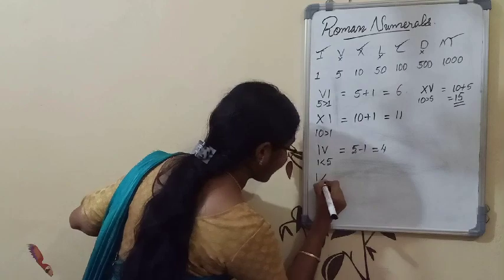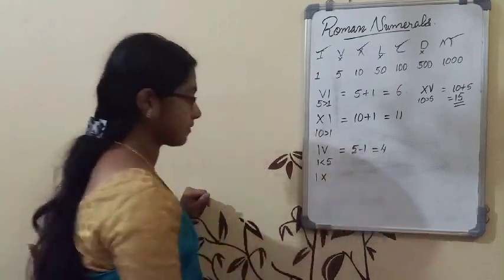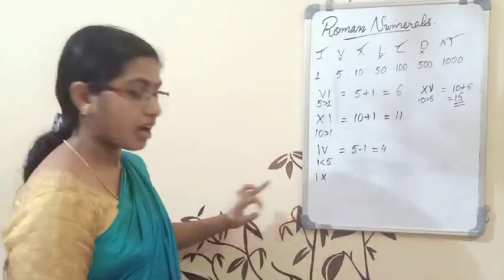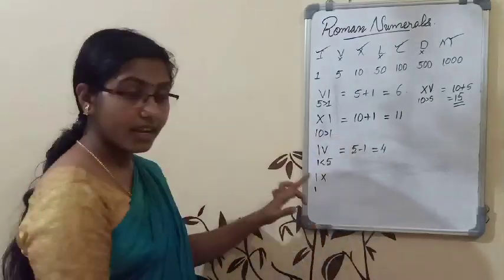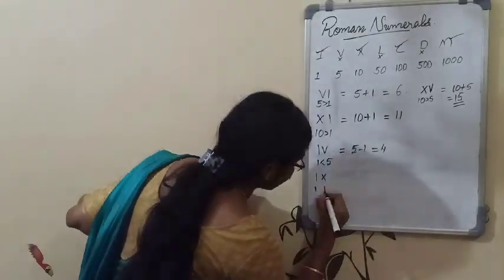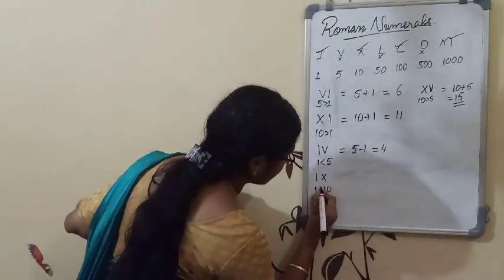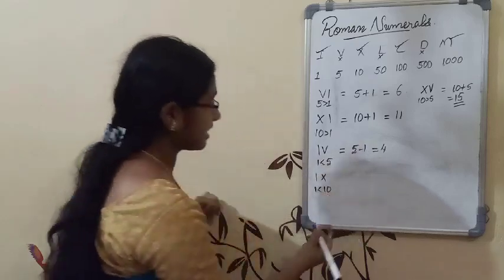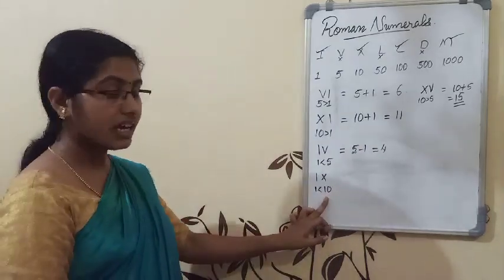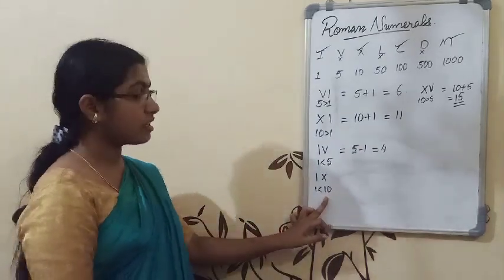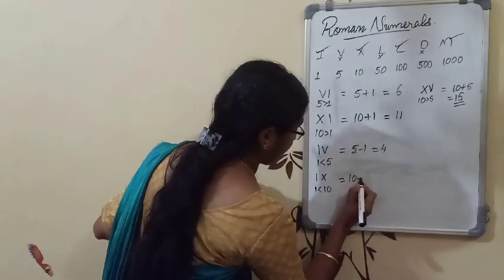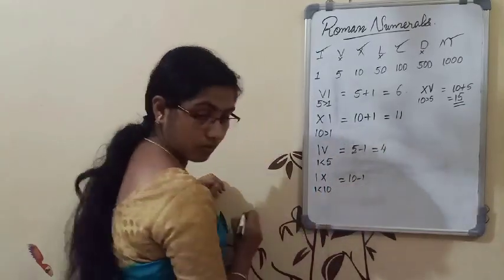Another example: IX. The value of I is one, and the value of X is ten. Comparing, one is less than ten, therefore we subtract: ten minus one equals nine. So IX means nine.